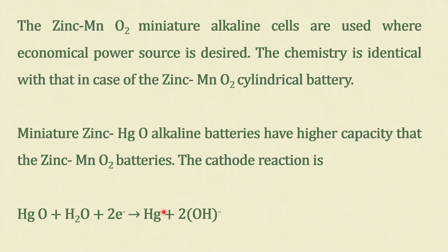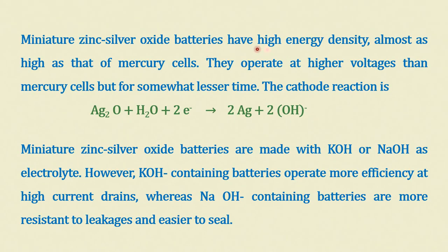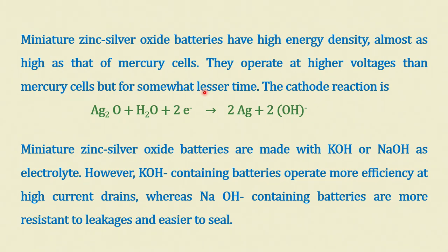The cathode reaction in mercury cells involves dissolution of mercury oxide to mercury — reduction, i.e., removal of oxygen. Miniature zinc-silver oxide batteries have high energy density, almost as high as mercury cells. They operate at higher voltages than mercury cells but for somewhat lesser time. The higher the current drawn, the less time the battery will operate efficiently, but large current can be drawn.